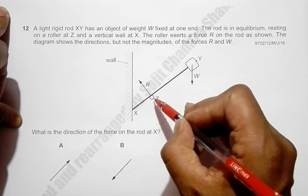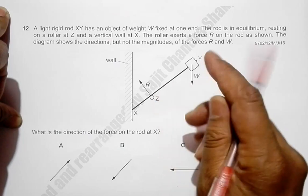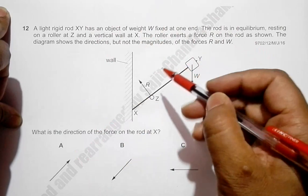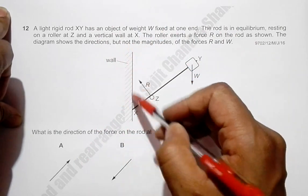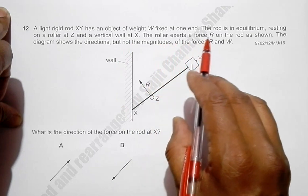The rod is resting on a roller at Z. The roller means that this thing is somewhat cylindrical in shape and it can rotate like this, and a vertical wall at X. The roller exerts a force R on the rod as shown.